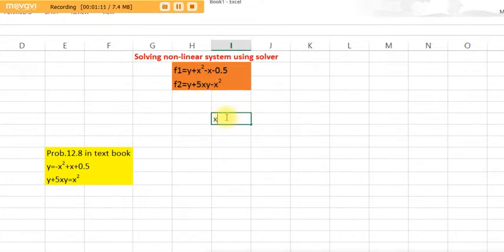We have to start with guess values of x and y. Give any guess values, suppose 5 and 1.